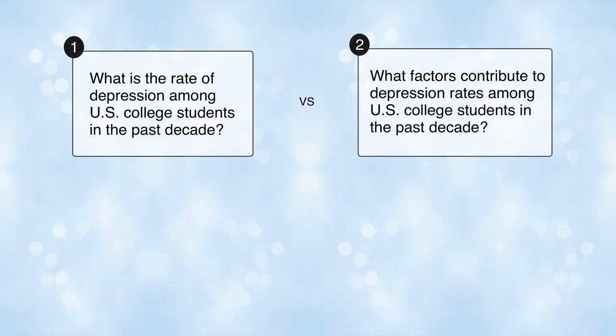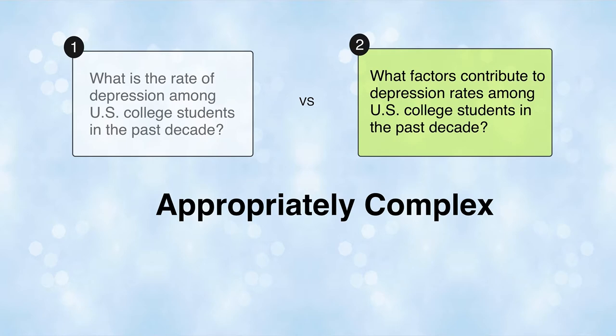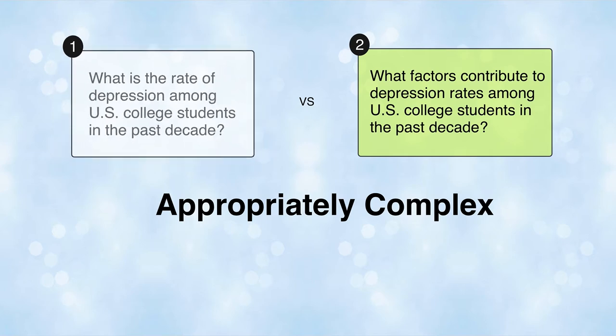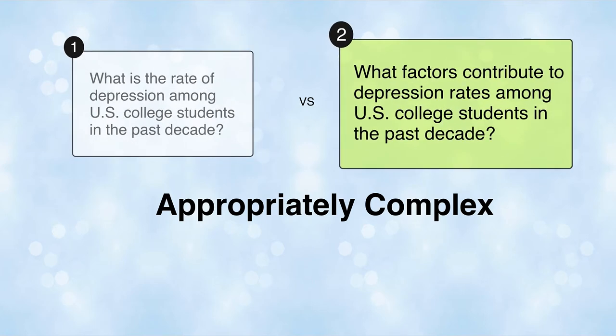Let's look at the last pair of questions. How are they different? Which question would lead to more insights? Question 2 is appropriately complex, while question 1 could benefit from more complexity. Question 1 can be answered with only a number, but question 2 requires synthesis and analysis of many ideas and sources in order to provide an answer.